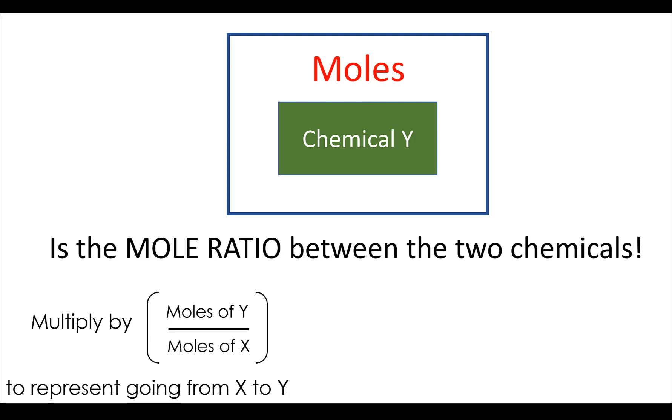And to go back, to figure out the amount of X that was associated with Y, we multiply by the ratio of X to Y. It's the opposite of the other one.